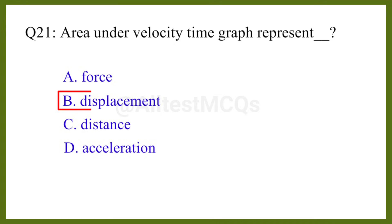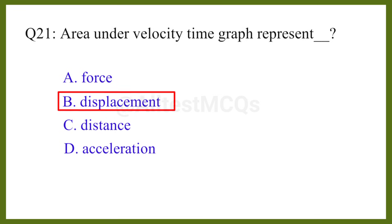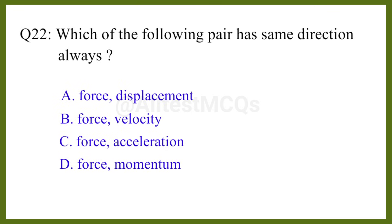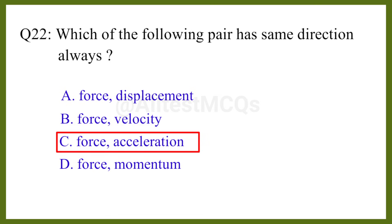Question number twenty-one: Area under a velocity-time graph represents the correct answer is option B: displacement. Question number twenty-two: Which of the following pairs always has the same direction? The correct answer is option C: force and acceleration.